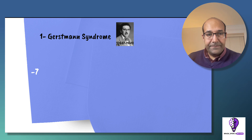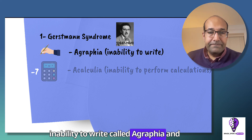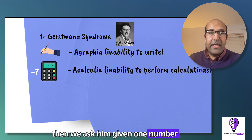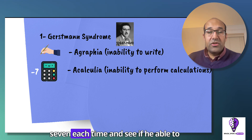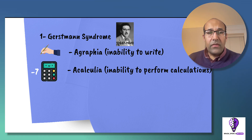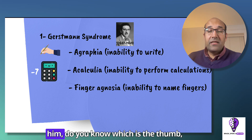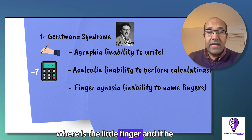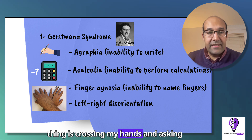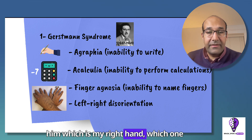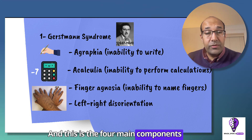The first criterion is agraphia — we ask the patient to write his name; inability to write is called agraphia. Second, we give him a number and ask him to calculate, starting from 100 and subtracting seven each time, to see if he can perform the calculation. Third, we show our hands and ask him to identify the thumb and little finger — inability to distinguish between fingers is called finger agnosia. Last, we cross our hands and ask which is the right and which is the left — inability to do this is called left-right disorientation. These are the four main components of Gerstmann syndrome.